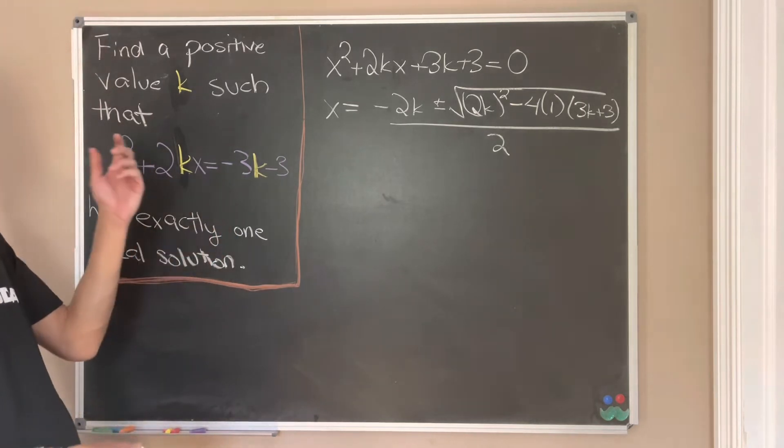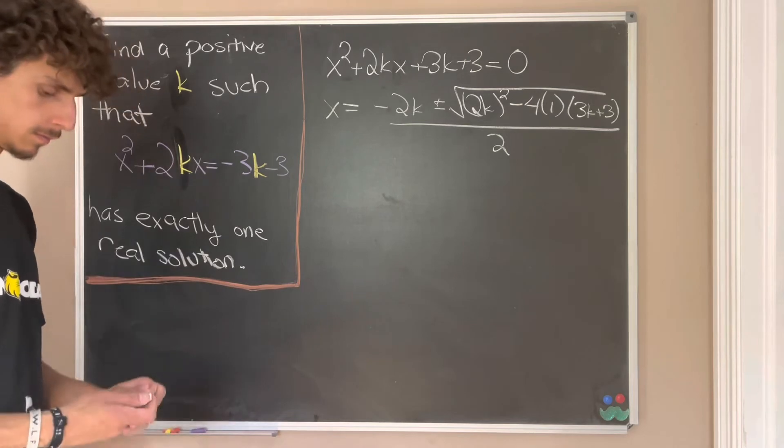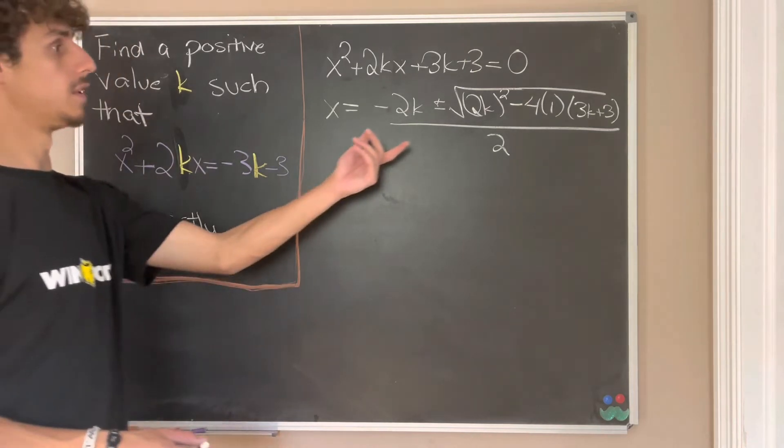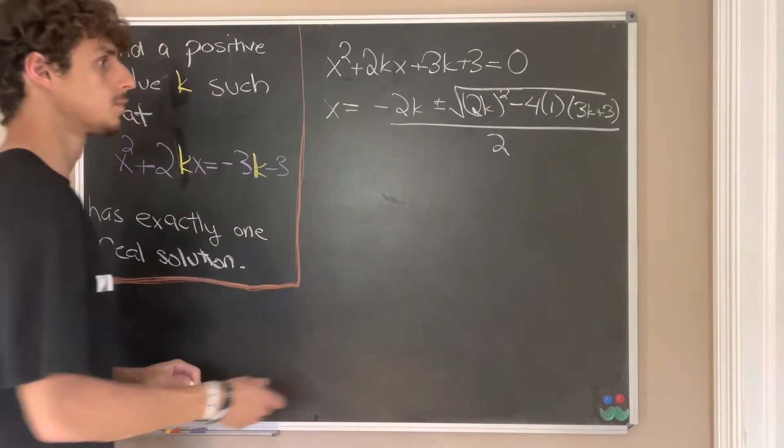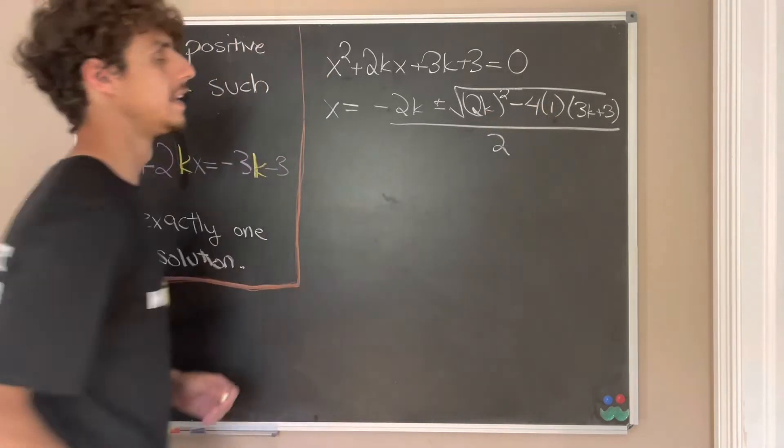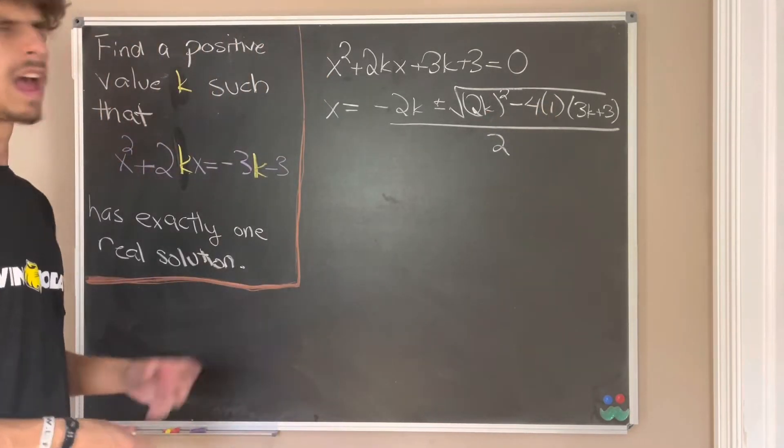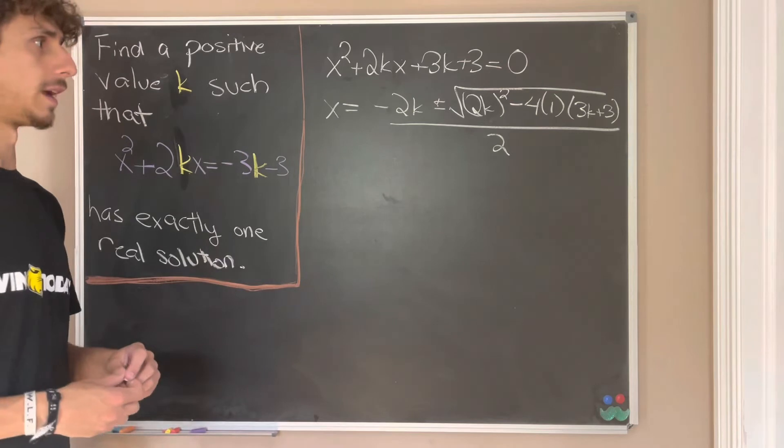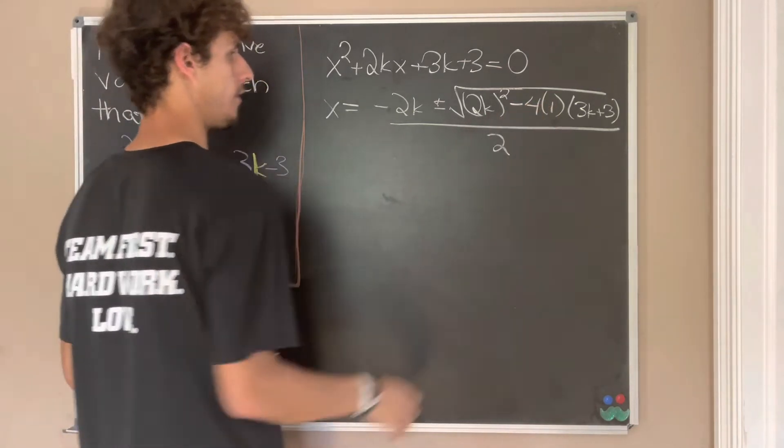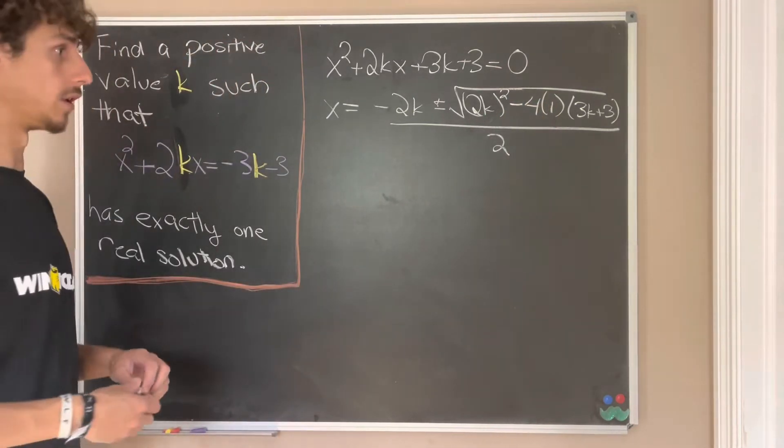But now for this to result in only one solution, we want this bit right here to all go off to zero. There's a name for that, I just can't think of it off the top of my head. Let me know what this part of our quadratic formula is called in the comments down below.